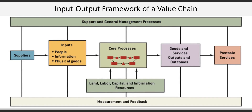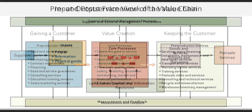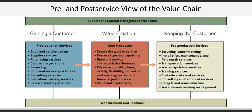Chapter 1 also introduced us to three different frameworks that can be used to describe a value chain. The first was the input-output framework, which is probably the most common interpretation of the value chain. A second framework is the pre- and post-service view, which focuses on the customer — getting a customer, creating value, and keeping them. Apple has been very successful at this by creating solid products people want that are tightly integrated with supporting services, convincing customers that the benefits exceed the price, and then keeping them. Apple's post-sales service and support is top-notch, but the well-conceived product and service ecosystem also creates a high perceived switching cost to the customer.